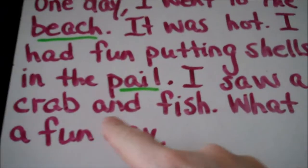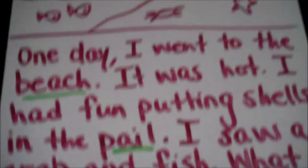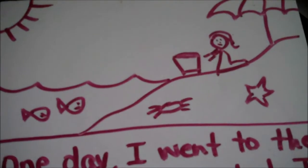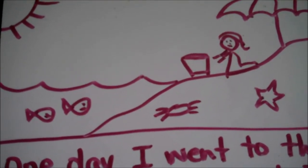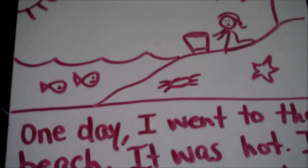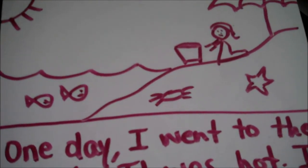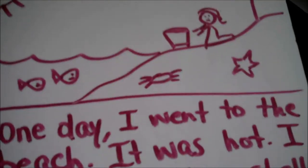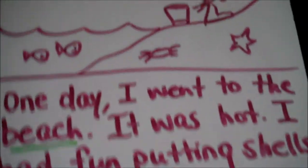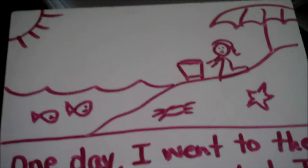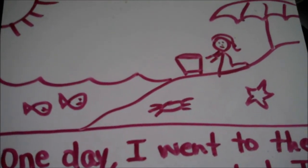'I saw a crab and fish. What a fun day.' Encourage your child to use the picture cues they see, but remind them that the words won't always be exactly what the picture shows — don't focus too much on the picture; focus more on the content of what the story is about. After they read it, see if they can retell it to you, so you can have a good idea if they understood what they just read.